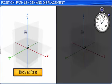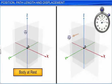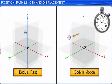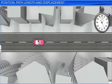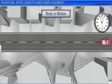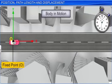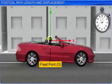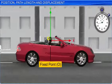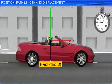Rest and motion are relative terms and are always specified with respect to the frame of reference. For example, suppose you take a frame of reference with a fixed point on the road as the origin — we say that the car is moving. However, when you take a person sitting in the car as the origin, the frame of reference itself is moving along with the car.